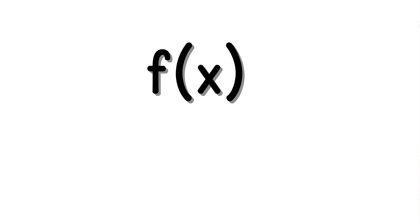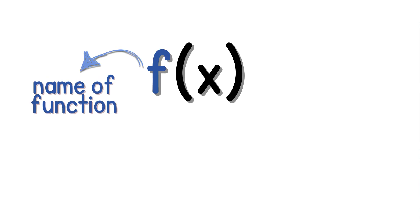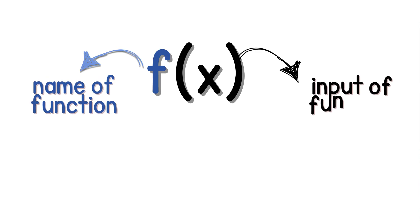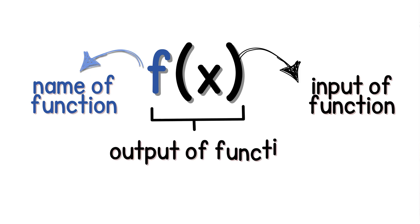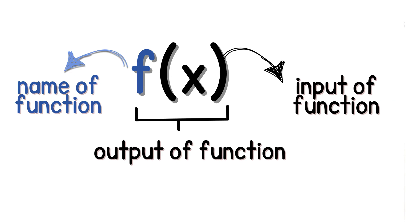So if we have the function notation, for example, f of x, then f tells us the name of the function, x will tell us the input of the function, and the entire f of x will tell us the output of the function.